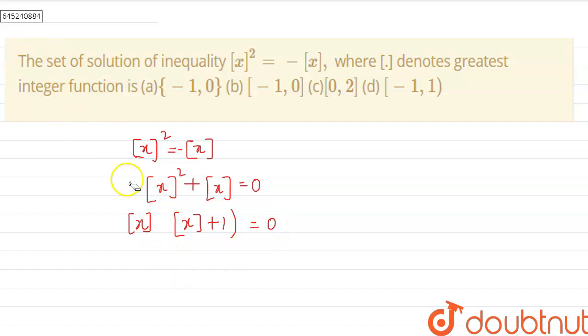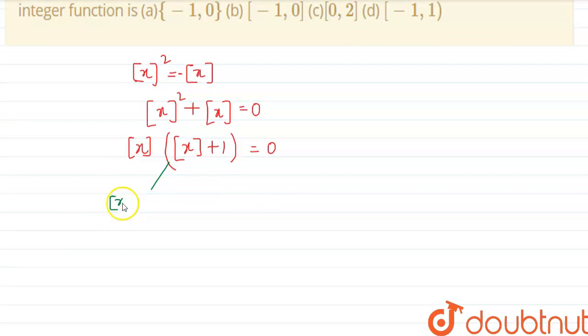Now, what we can do is, see the solution will be either when gif of x is 0 or gif of x plus 1 is 0.